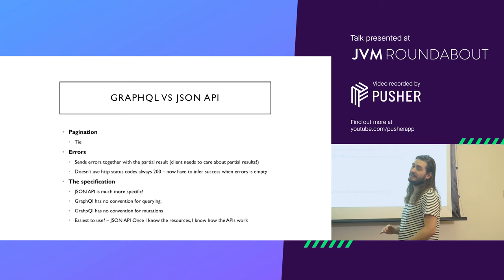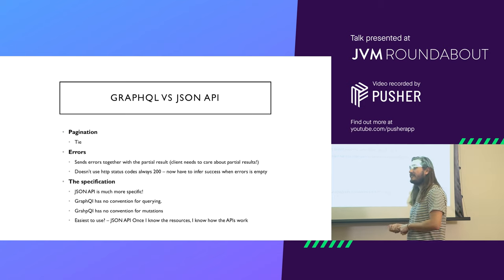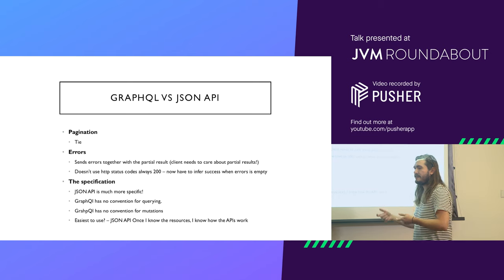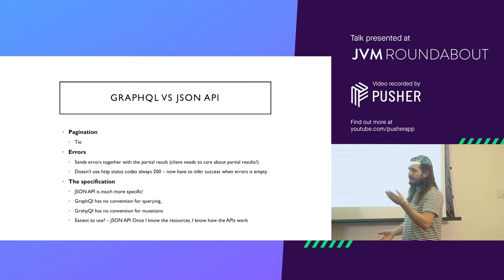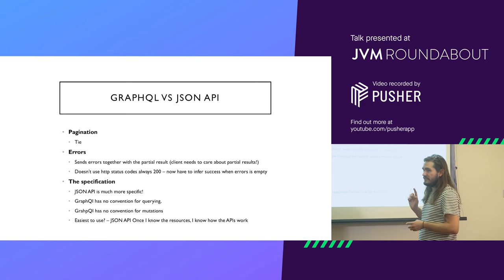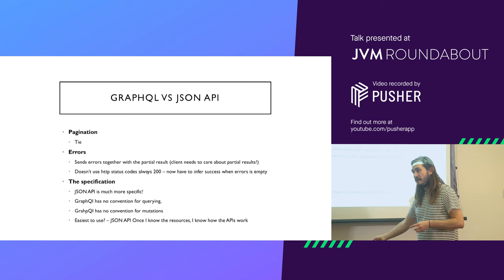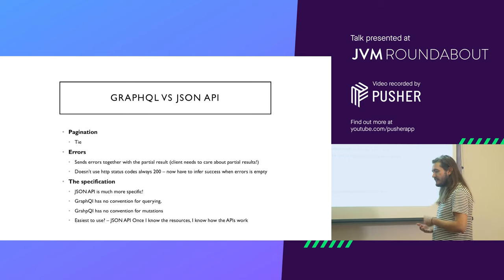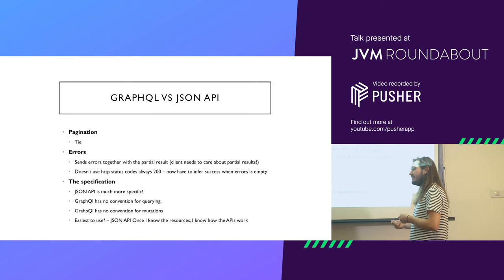JSON API is so much more specific, and GraphQL has no convention at the moment for what querying looks like — for example, how do you request a value greater than two for an ID? It doesn't say how that should look as a query, nor for mutations. The easiest one to use is JSON API because once you understand how it works, you know how to use any JSON API. All you need to then know is how the resources are linked together.